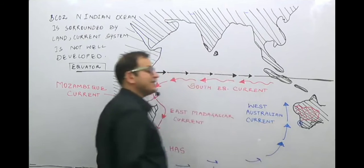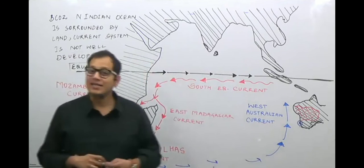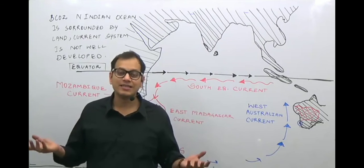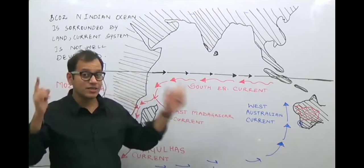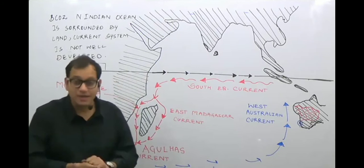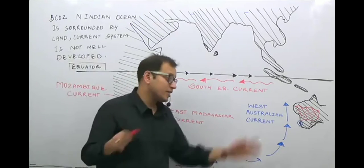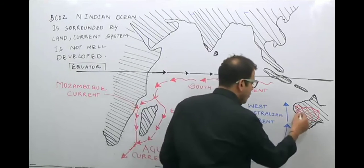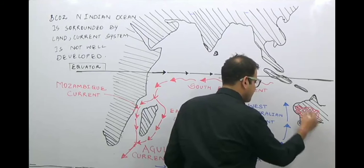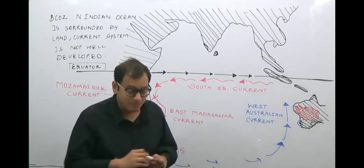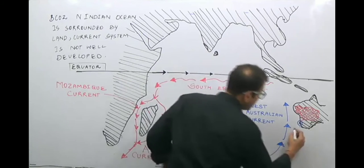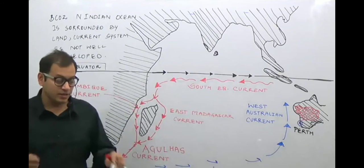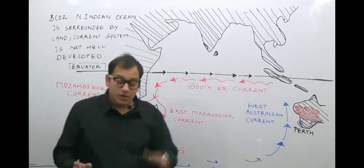The West Australian Current is a cold current. In the previous lecture on the Pacific Ocean, we studied the East Australian Current, which is a warm current — remember, the West Australian Current is a cold current. Any cold current supports the formation of hot deserts, so we have the Great Australian Desert in this region. The major city located here is Perth.